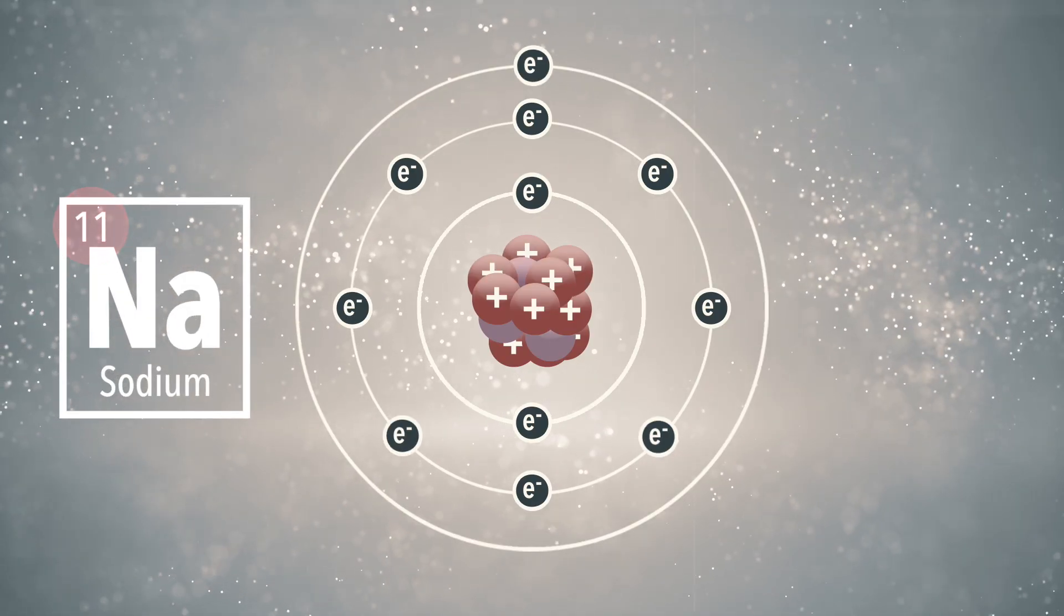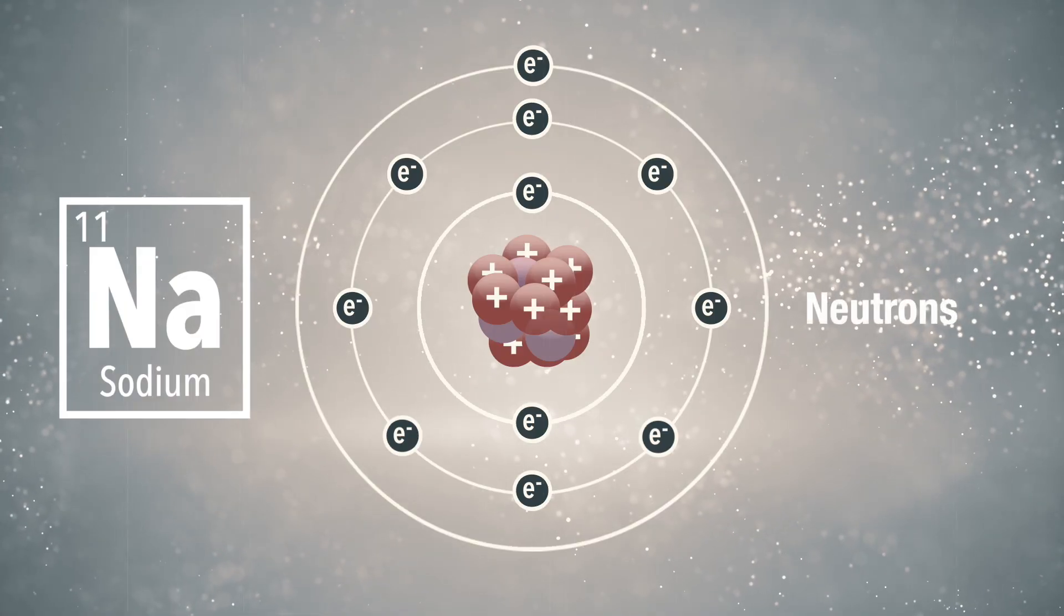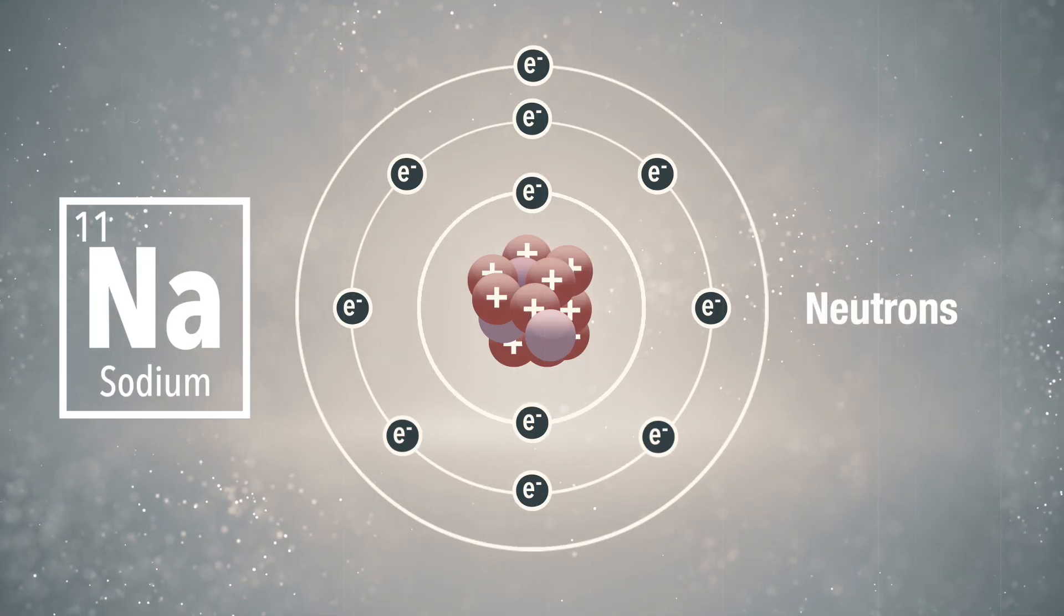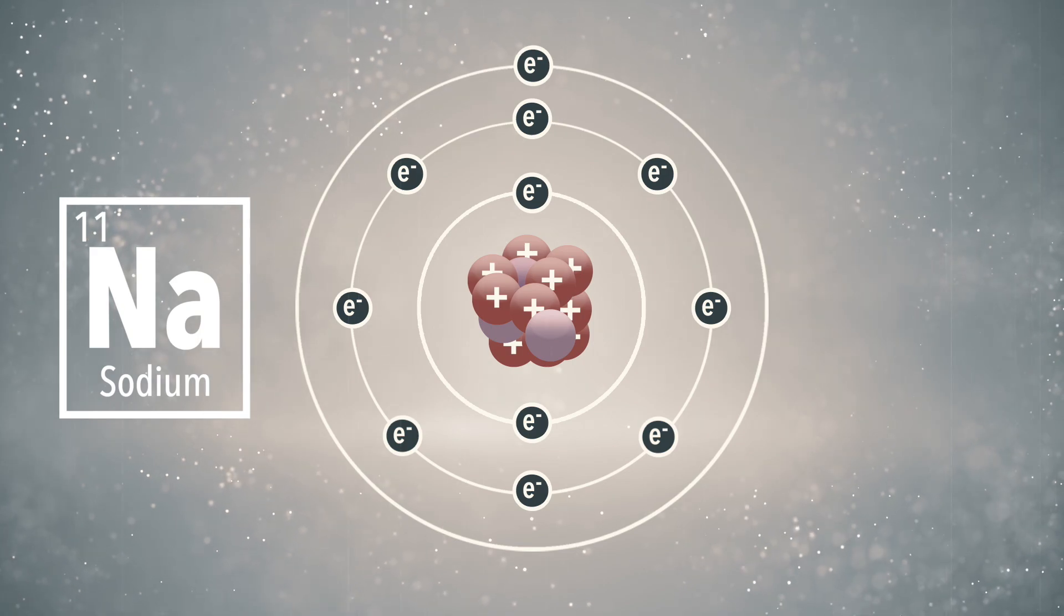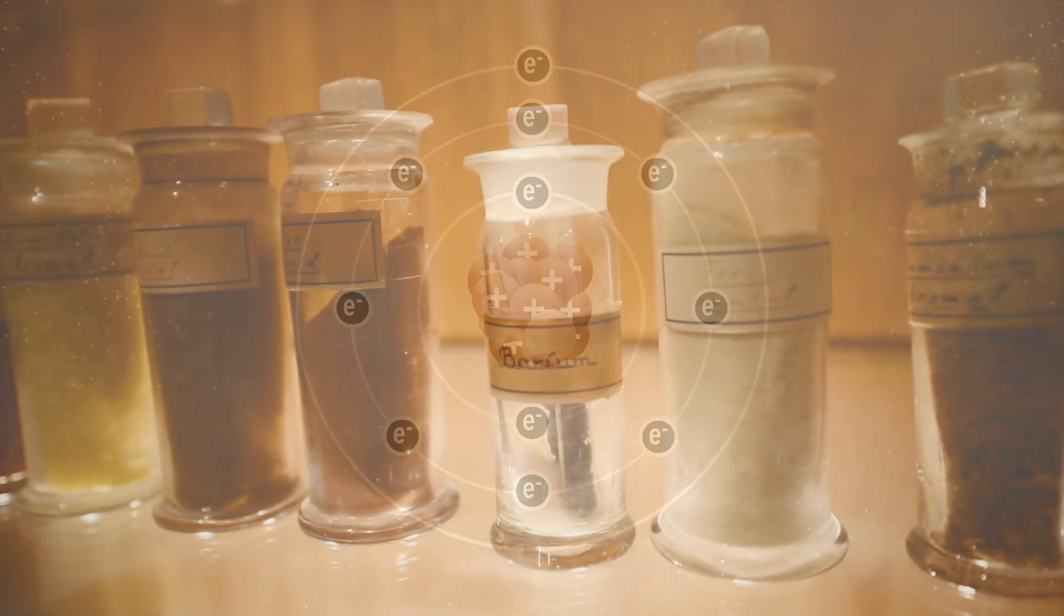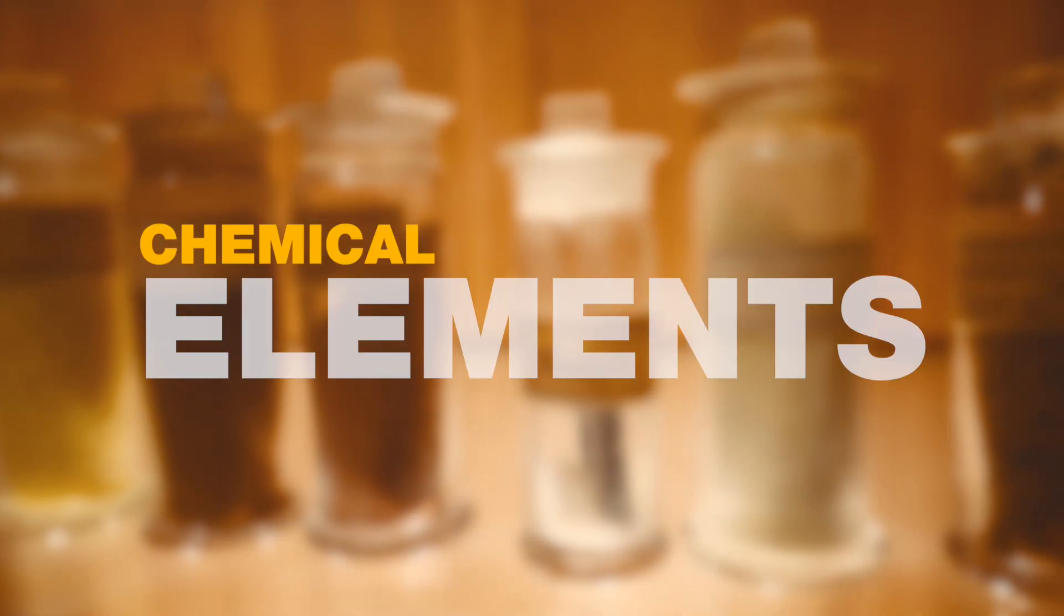In addition, the core can also contain a varied number of neutrons. But these are, like the name implies, neutral and have no net charge. In total, there are around 100 different types of atoms. And we refer to these as the different chemical elements.